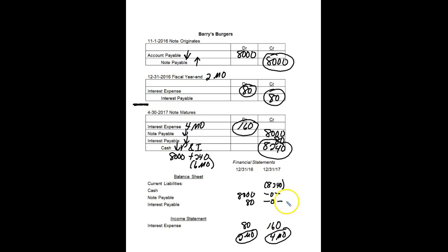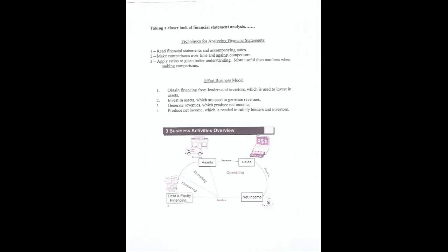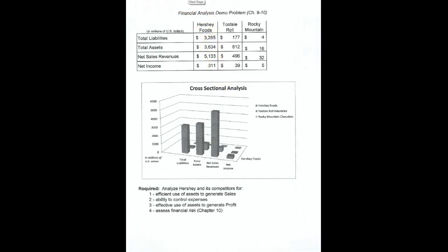The other topic is in your Chapter 9 notes — let's go back to the financial analysis demonstration problem for Chapters 9 and 10. Remember Hershey Foods? We wanted to compare it with some competitors. If we only compare numbers, Hershey Foods always looks bigger. So to really compare things, we convert to percentages. We already did the first three ratios in Chapter 9. The Chapter 10 ratio is the debt-to-asset ratio. Note that in my demonstration, total liabilities and total assets represent averages — beginning plus ending divided by two.